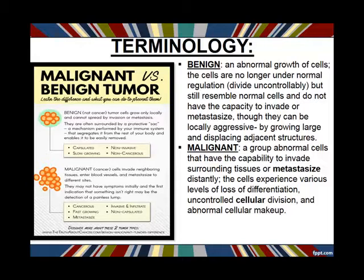Benign things, even though they can't invade tissue around them, can push things out of the way — that's when they become what we call locally aggressive. Something benign doesn't have the capability to invade adjacent tissue planes; the worst it can do is push them out of the way. But as it gets bigger and pushes things way out, we say this is something locally aggressive, because it's now deforming the tissues around it by displacing everything.